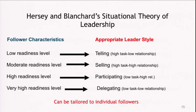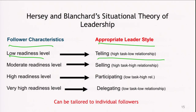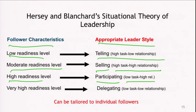In Hersey and Blanchard's Situational Leadership Theory, follower characteristics are mapped to appropriate leader styles. At low readiness, the style should be high task and low relationship. At moderate readiness, a selling style is used — high task, high relationship. At high readiness, participative leadership is shown — low task, high relationship. At very high readiness, a delegating style is used — low task, low relationship.